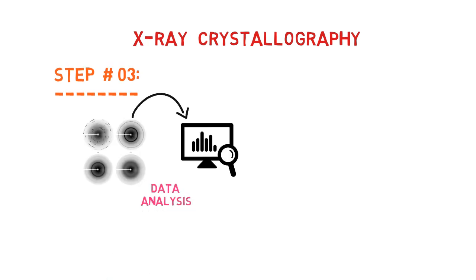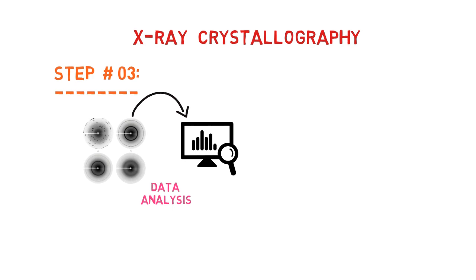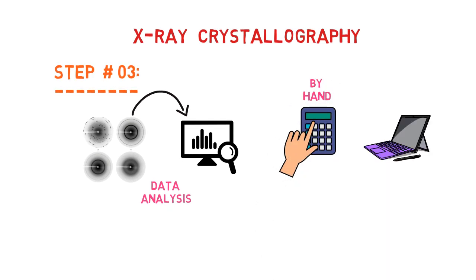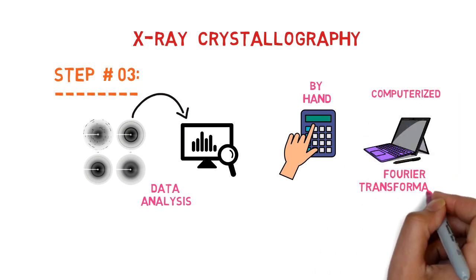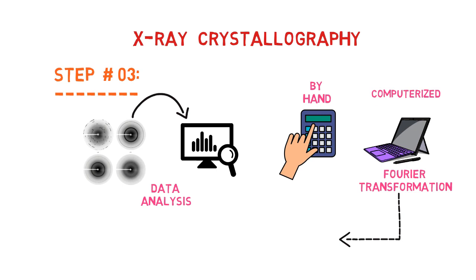Once the electron density map has been made, the analysis of the crystallographic data is relatively straightforward. It does, however, require complex mathematics to make sense of the information. In the early days of X-ray crystallography, these calculations were done by hand, but now computers are used to perform them. The calculation used is called the Fourier transformation. This calculation transforms the data into a three-dimensional representation of the atomic or molecular structure of the sample molecule or material.